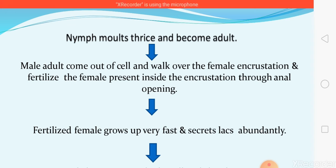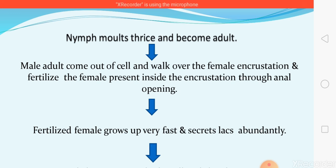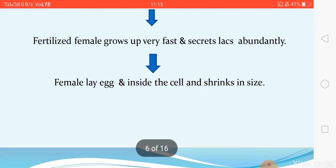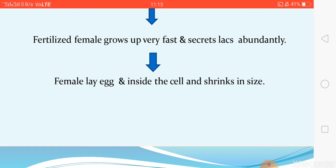After fertilization, the female lays eggs inside the incrustation after one to two days. After oviposition, the female shrinks in size, leaving space for the eggs in the posterior region of the incrustation. After laying eggs, the female shrinks and then dies. Thereafter the life cycle continues: eggs hatch immediately, nymphs come out of the incrustation, and move to the tender branches of the host plant.